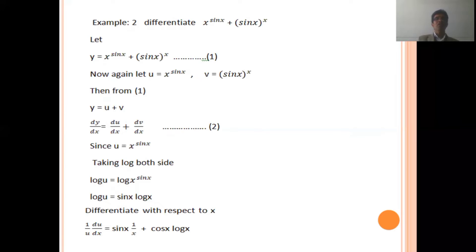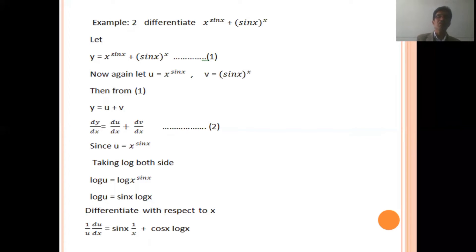Example number two: differentiate x to the power sin x, plus sin x to the power x. Let y equal to x to the power sin x, plus sin x to the power x. Now let u equal to x to the power sin x, and v equal to sin x to the power x. Therefore, y equal to u plus v. Differentiating, dy upon dx equal to du upon dx plus dv upon dx — this is equation number two.